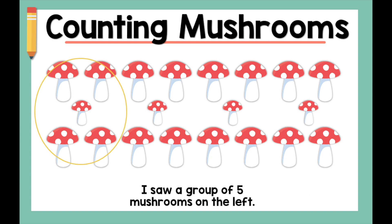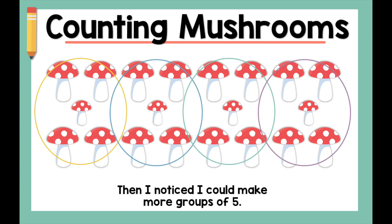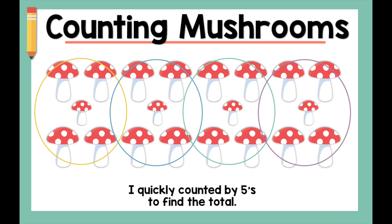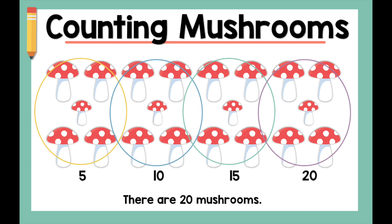I saw a group of five mushrooms on the left. Then I noticed I could make more groups of five. I quickly counted by fives to find the total: five, ten, fifteen, twenty. There are twenty mushrooms.